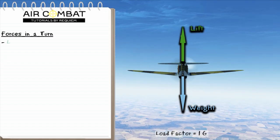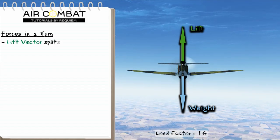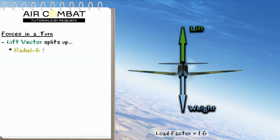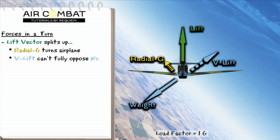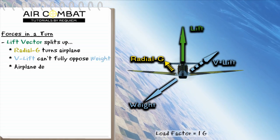So we're starting out in Australian level flight, we're going to initiate a turn. So as we turn, the lift factor is going to split up into radial G, which turns the airplane, and vertical lift. But the vertical lift can't oppose the weight, so we end up starting to descend.